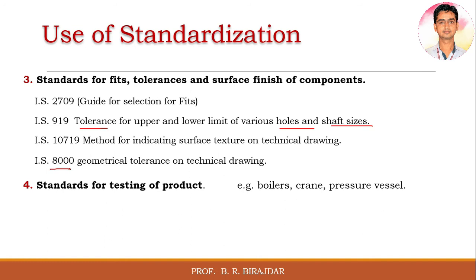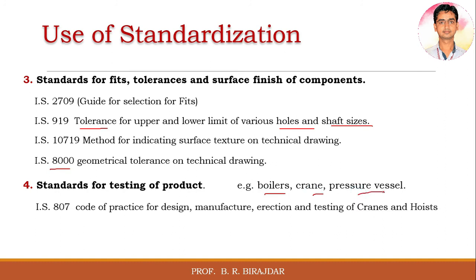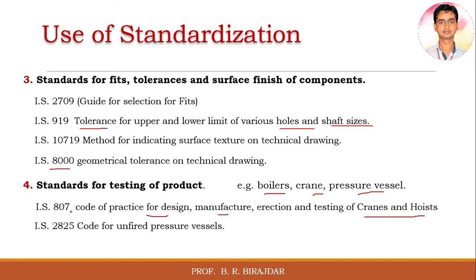The fourth category is standards for testing of products. For example, for a boiler, crane, or pressure vessel, specific codes must be followed. IS 807 covers the design, manufacturing process, rating, and testing of cranes and hoists — it includes all design, manufacturing, erection, and testing aspects. IS 2825 covers the unfired pressure vessel — design, fabrication, and commissioning are all included in IS 2825.